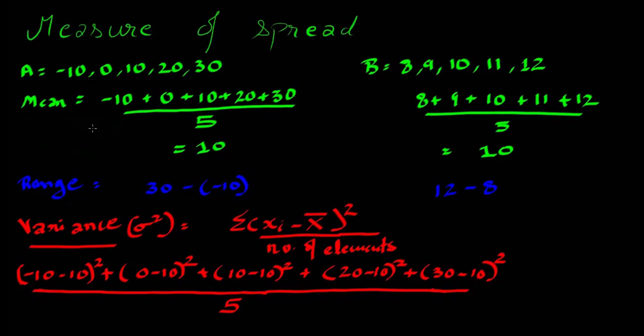Mean is also known as the measure of central tendency, but for both sets it is 10. So it is not able to give us much insight about the data sets because both data sets are different.